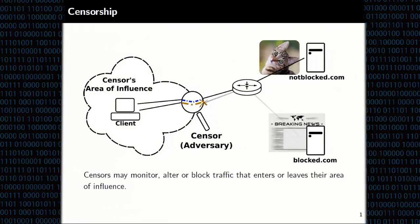To frame the problem and the threat model: when we talk about censorship resistance, we're considering a very powerful, usually nation-state adversary that's able to monitor, alter, or block all of the traffic inside its area of influence. Our eventual goal is to eliminate their ability to do selective blocking by making it indistinguishable to the censor which site the user is accessing.